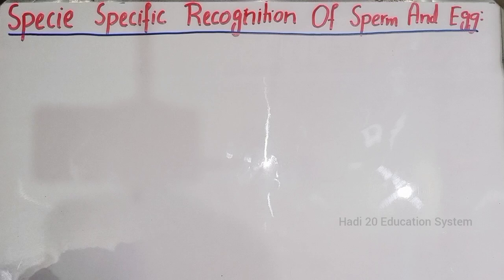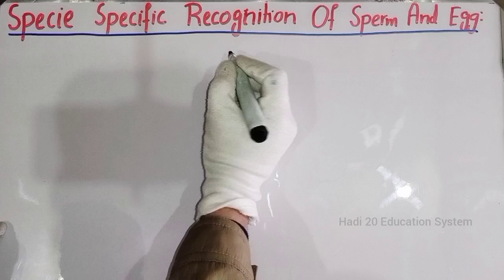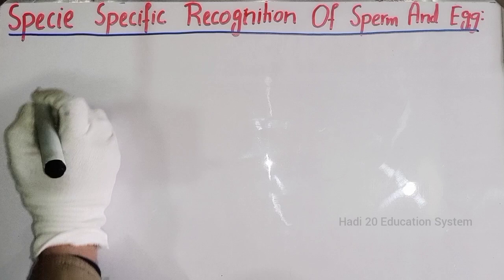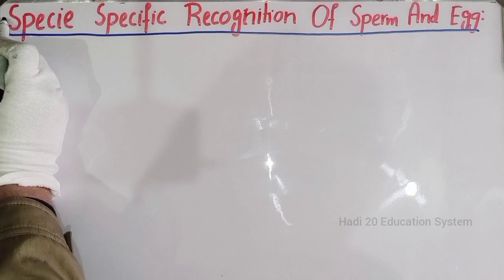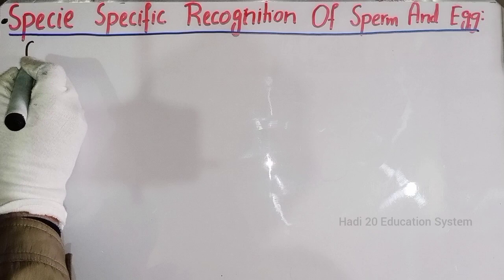Dear friends, if we talk about attraction or recognition — species-specific recognition of sperm or egg — then here are five basic steps. We have the topic of fertilization, and there are five basic steps in total. The first step is chemo-attraction.